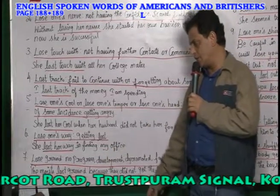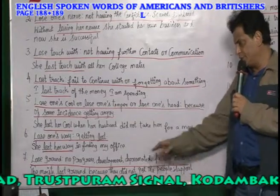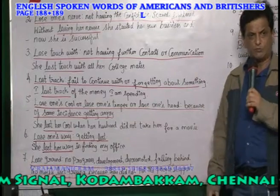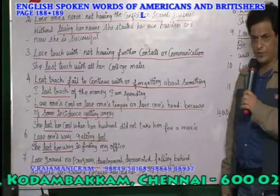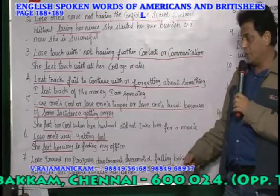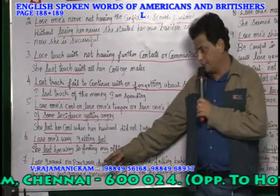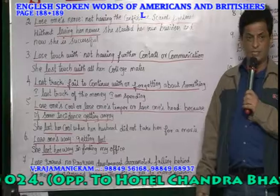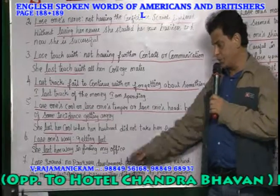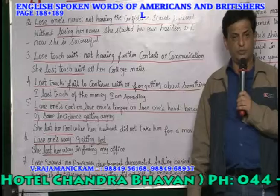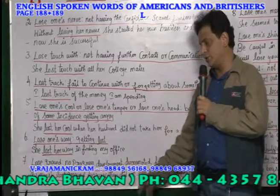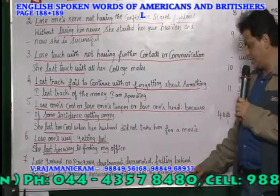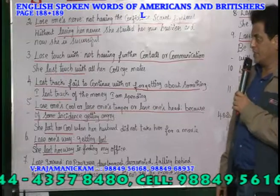Lose ground — what do you mean by lose ground? No progress at all, no development at all. Instead of promotion you are getting demoted; instead of going up you are falling behind. So lose ground — the Maoists are the terrorists, or the extreme communists. The Maoists lost ground — they don't have any progress in their freedom fight because they did not get the people's support.